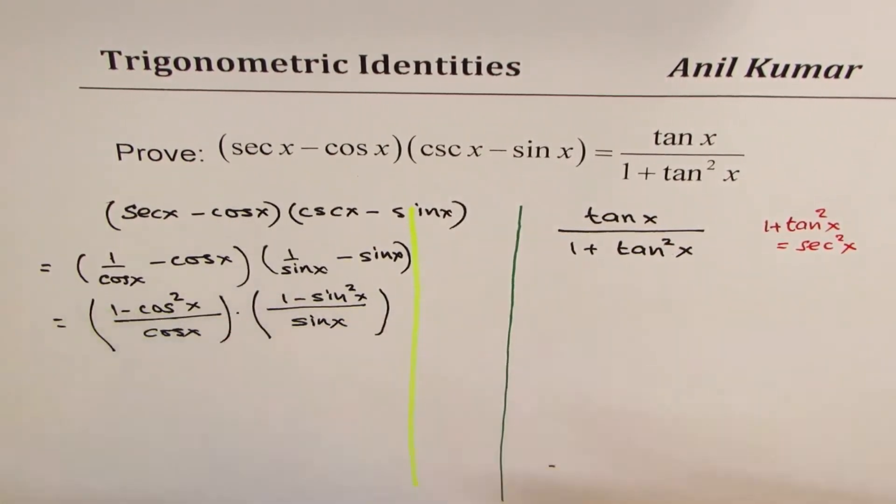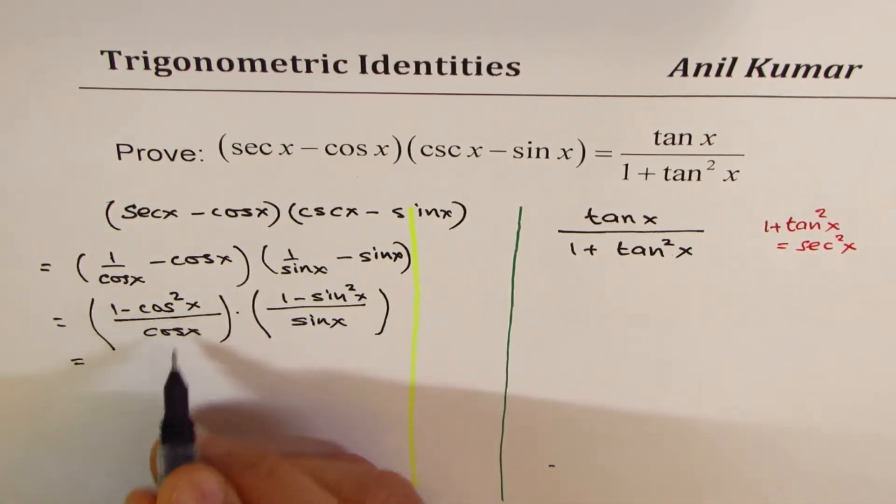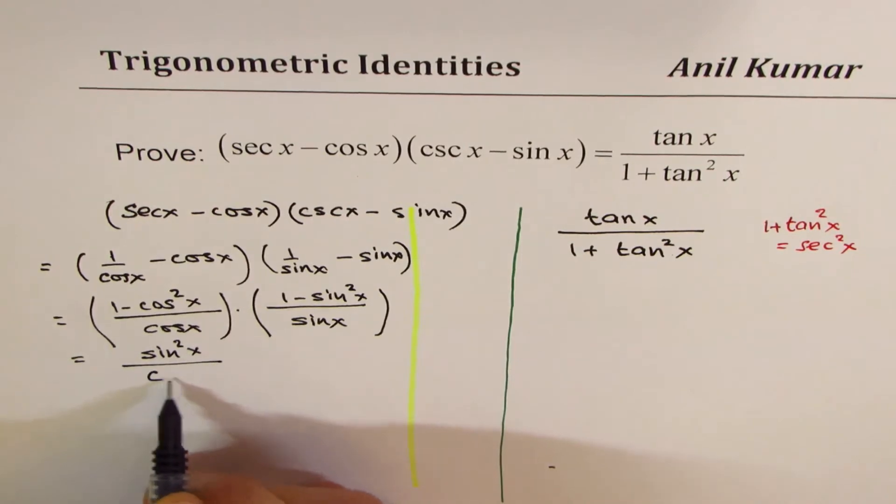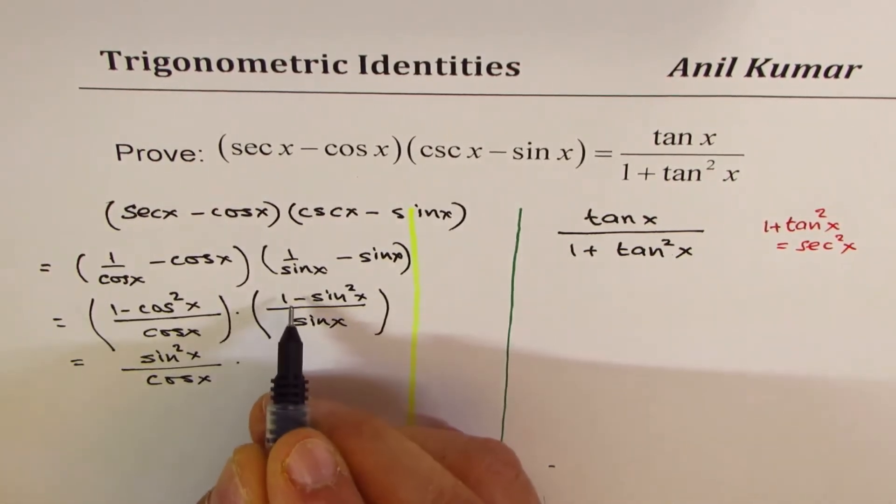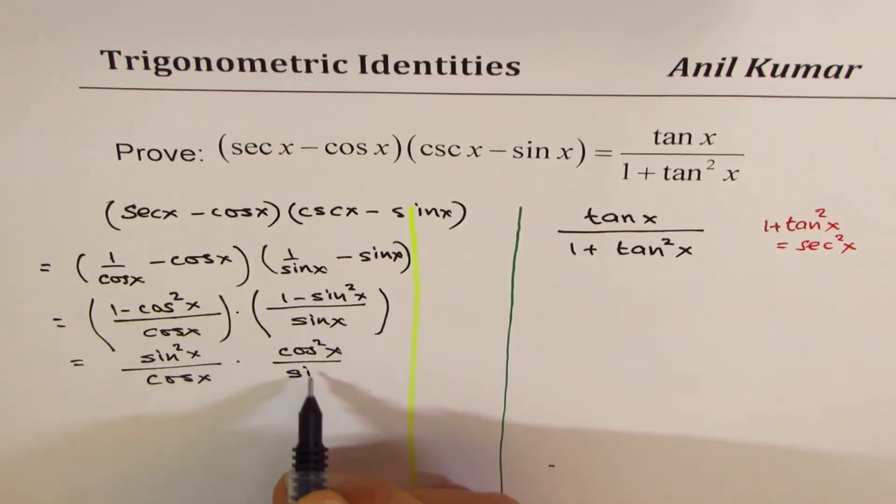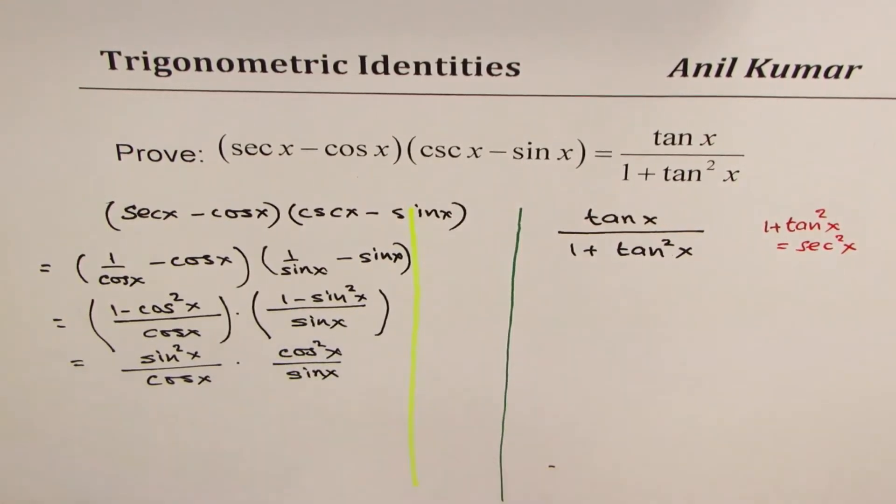Now, as you know, 1 - cos²x = sin²x. So we could write this as sin²x / cos x, and here 1 - sin²x can be written as cos²x / sin x. That is what you get on the left side. We could cancel and get a few terms, but I'll continue later.